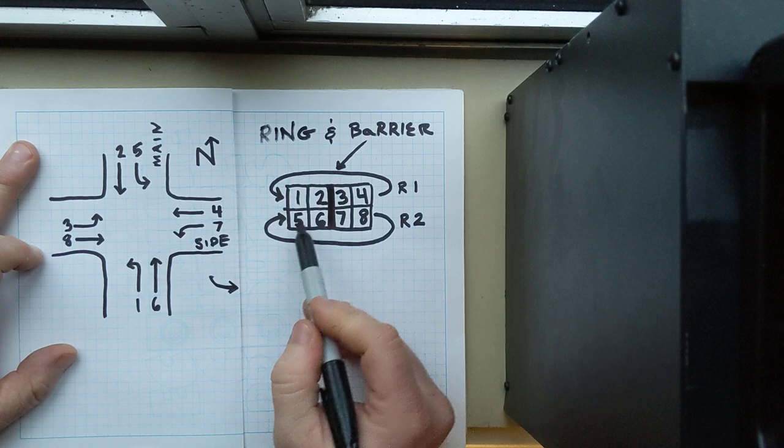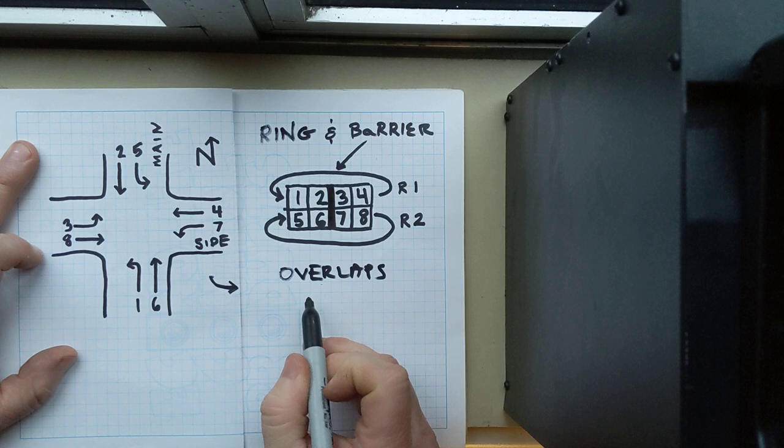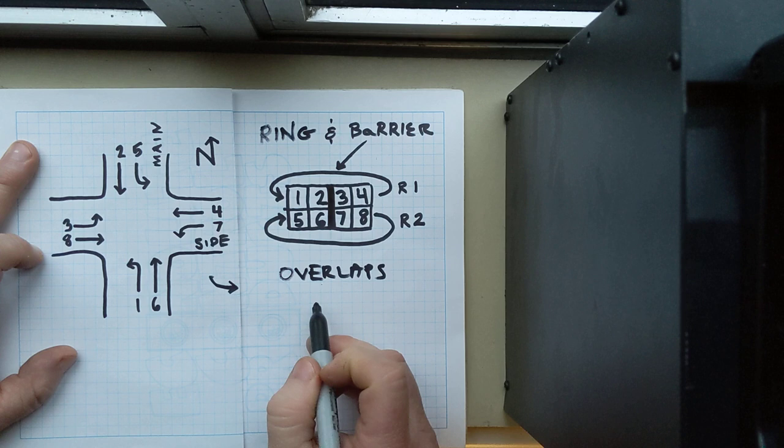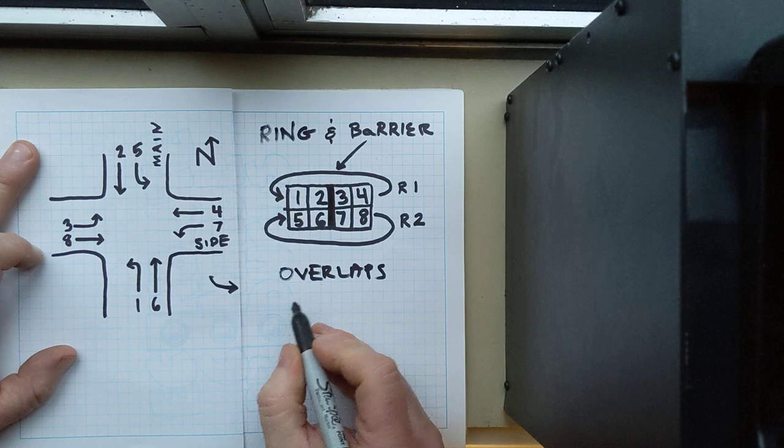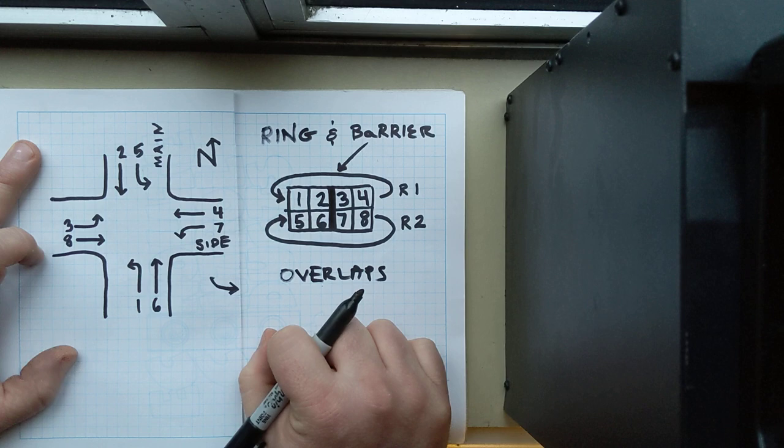Now, there's one other thing that I wanted to talk about here when it came to traffic logic, and that is overlaps. And really quick, what an overlap is, is another phase that runs at the same time as another phase. And so, in a TS1 cabinet, we have 12 channels. And then in a TS2 cabinet, we have technically 16 channels that we can work with. Four of which are overlaps in both of those cabinets.